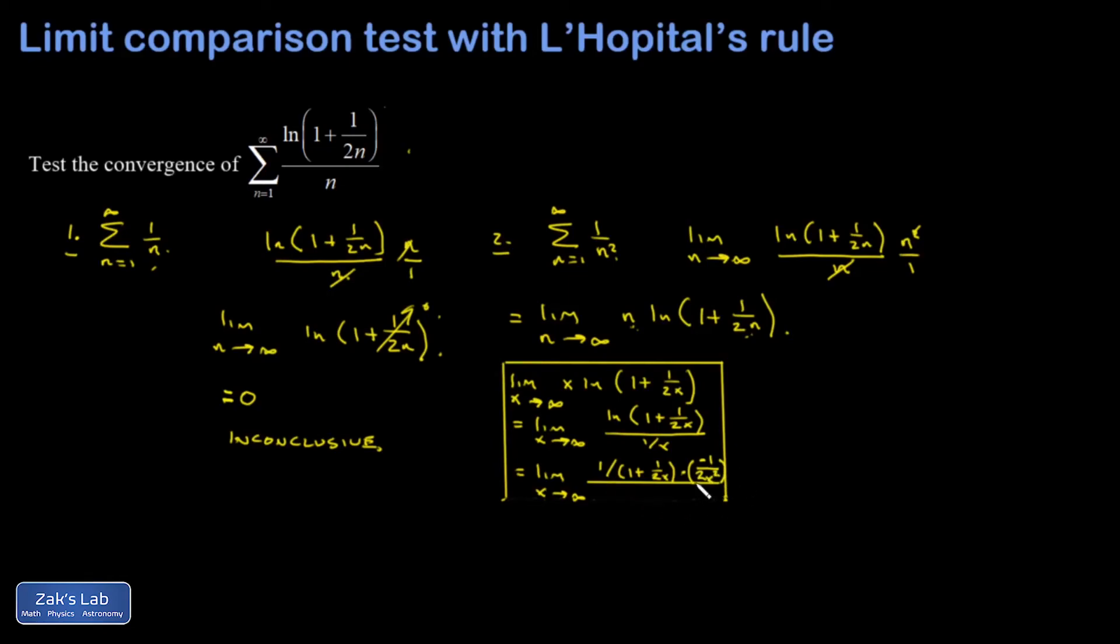In the denominator, I have the derivative of 1 over x, which again is negative 1 over x squared. And some good things are going to happen. My 1 over x squared and my minus signs are going to cancel. I'm still going to have a 1 half in the numerator. And I end up with the limit as x goes to infinity of 1 half divided by 1 plus 1 over 2x as x goes to infinity. Now that 1 over 2x piece unambiguously goes to 0 because when x becomes infinite, dividing by it is going to give you 0. So I'm left with just a 1 half.